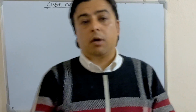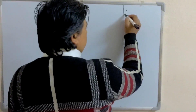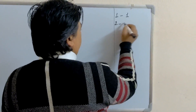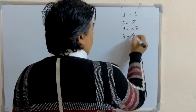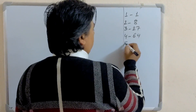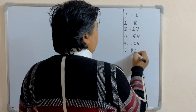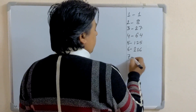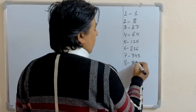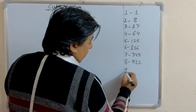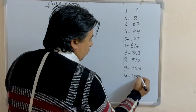Before learning that, we have to know the cube numbers from 1 to 9. The cube of 1 is 1, 2 is 8, 3 is 27, 4 is 64, 5 is 125, 6 is 216, 7 is 343, 8 is 512, 9 is 729, and the cube of 10 is 1000.